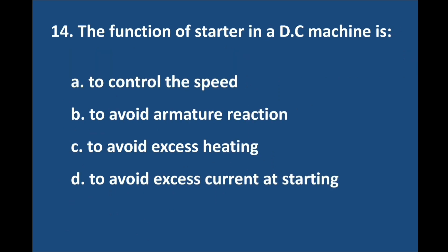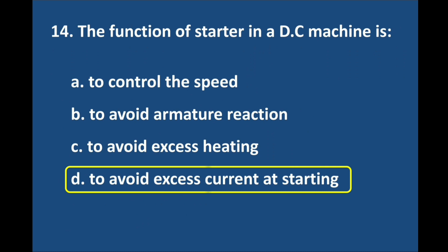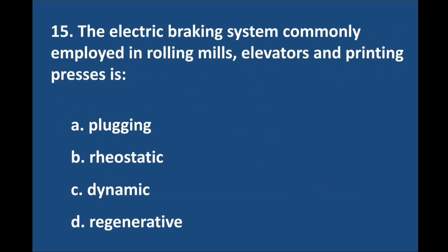Question number 14. The function of a starter in a DC machine is — answer is option D: To avoid excess current at starting. Question number 15. The electric braking system commonly employed in rolling mills, elevators and printing press is — answer is option A: Plugging.